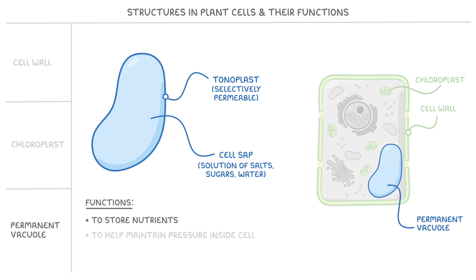Another key function though is to help maintain pressure inside the cell, which is necessary to keep the plant rigid and prevent wilting. When a plant doesn't have enough water, it wilts because there's not enough pressure in the vacuoles to keep the cells firm.